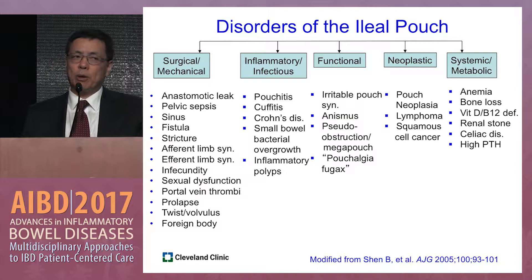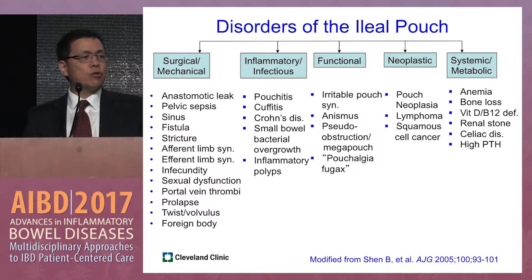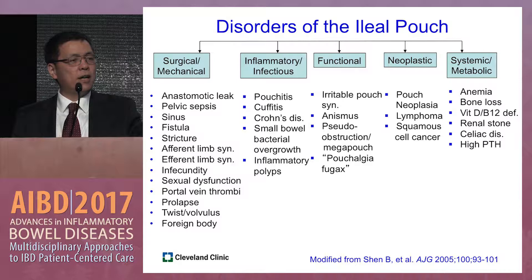The inflammatory type is mainly represented by pouchitis, as well as cuffitis and Crohn's disease of the pouch. The functional category has two main types: irritable pouch syndrome and dyssynergic defecation, or anismus.